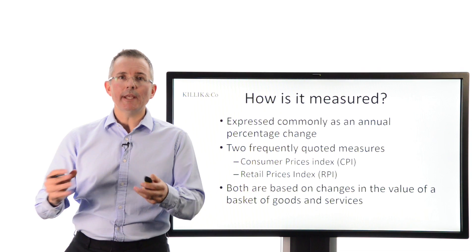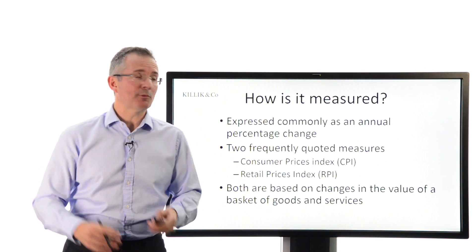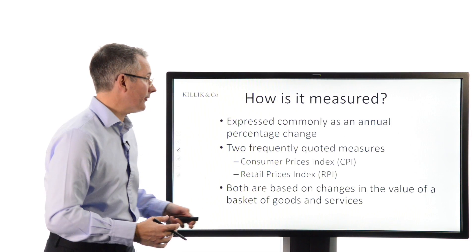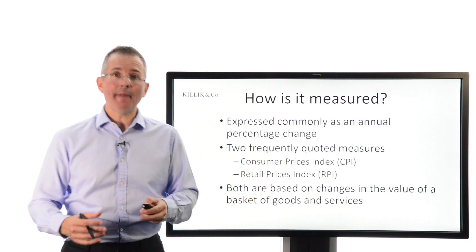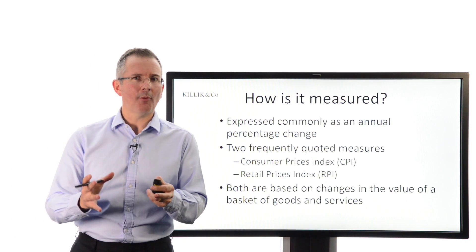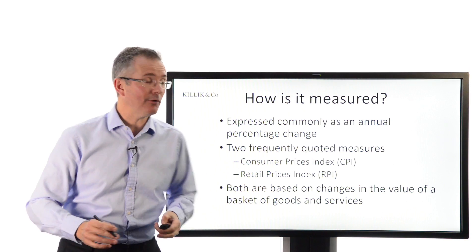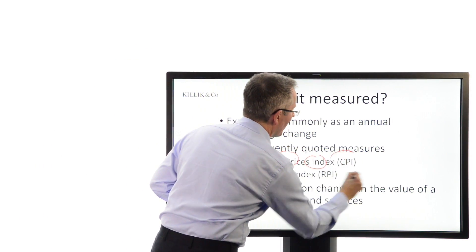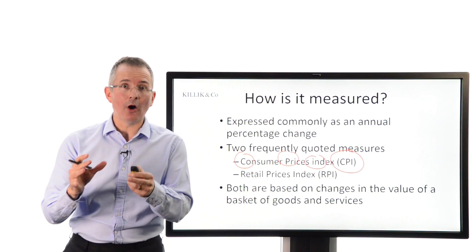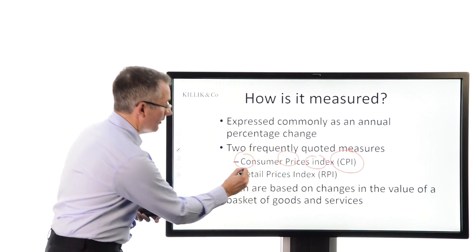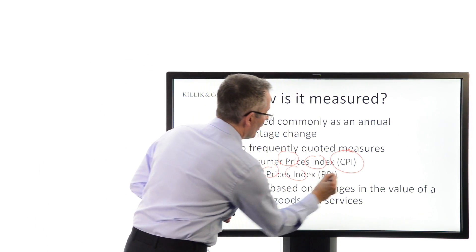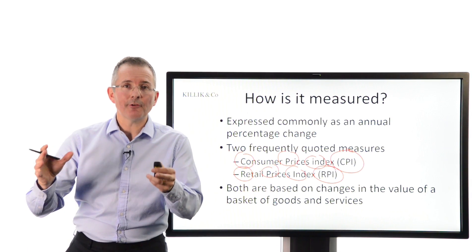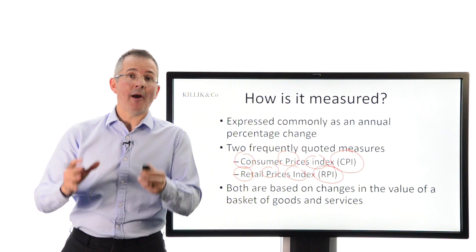How is inflation measured? It's usually quoted in headlines and research reports as an annual percentage change — 1.2% for argument's sake. There are two measures commonly quoted in the UK, and this is a UK-focused video. One is the Consumer Prices Index, the CPI, which hasn't been around as long as the more traditional method, the Retail Prices Index, or RPI. Bear in mind there are two.